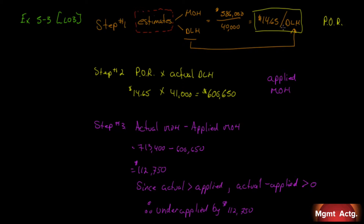To recap the three-step process: step one, use estimates to get the predetermined overhead rate, then ignore the estimates. Step two, multiply the predetermined overhead rate by the actual cost driver to get applied overhead. Step three, subtract applied overhead from actual overhead. If the result is greater than zero, actual exceeded applied and we are underapplied. If actual were less than applied, it would be negative — overapplied. We are underapplied by $112,750.